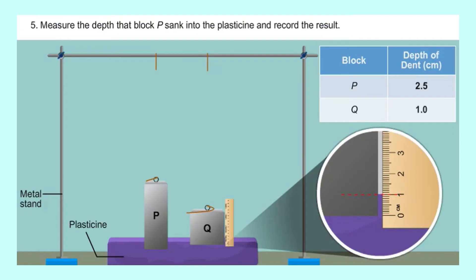This is because metal block P has a less surface area compared to metal block Q. So, the smaller the surface area, the bigger the pressure exerted.